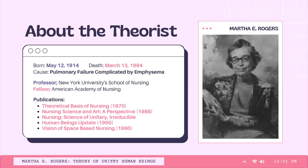Martha E. Rogers was born on the 12th day of May, 1940, and died on March 13, 1994, due to pulmonary failure complicated by emphysema. During her years, she worked as a professor at New York University School of Nursing and as a fellow in the American Academy of Nursing. With years of learning, especially in nursing, she was able to have some publications which include Theoretical Basis of Nursing in 1970, Nursing Science and Art, Nursing Science in 1980, Nursing Science of Unitary Irreducible Human Being Update in 1990, and Vision of Space-Based Nursing the same year.